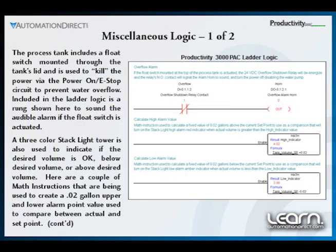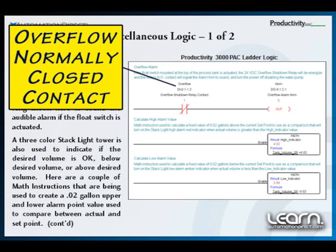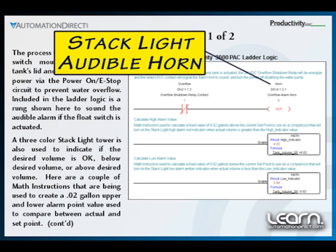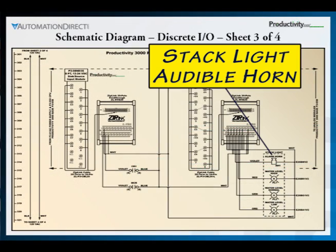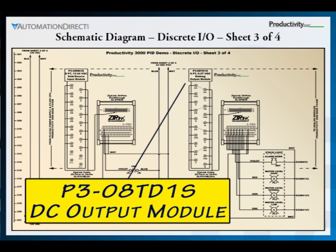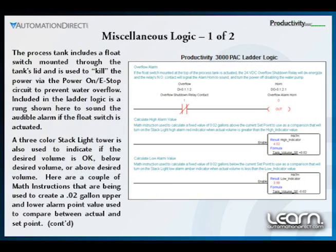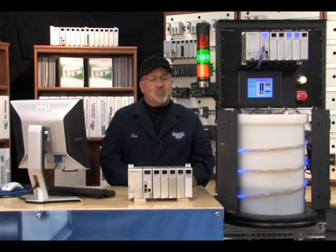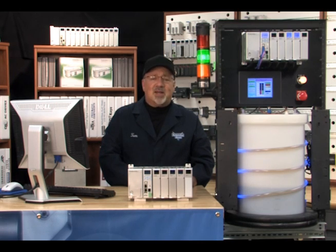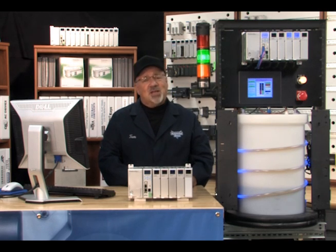Back to our ladder logic, we see the symbol for a normally closed contact with the tag name 'overflow' is used to control the stack light audible horn, named 'horn', which is physically wired to the first output of our P3-08ND1S DC output module. Bottom line: if the float switch is actuated indicating a too high water level in our process tank, then the overflow shutdown relay is de-energized, the power on and emergency stop circuit is dropped, which kills power to the diaphragm pump. Also the stack light horn is sounded and there is an indication on the Seymour touch panel that the float switch has been actuated.